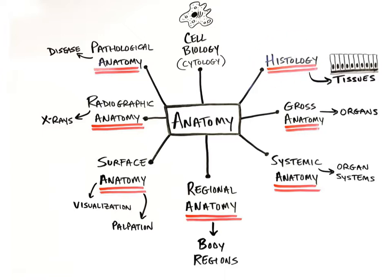Histology is the study of the microscopic structure of tissues, such as the muscle and various connective tissues. Gross anatomy is the study of structures that can be examined without the use of a microscope, including organs like the heart or brain. The word gross refers to their larger size, not the fact that some people may find them disgusting.